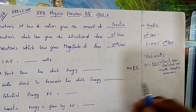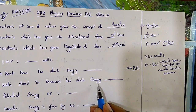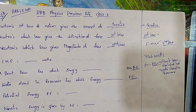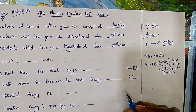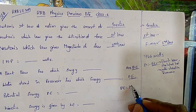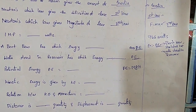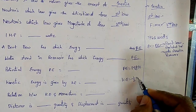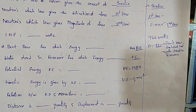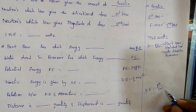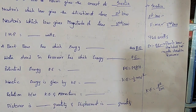Water stored in a reservoir also has potential energy. The formula for potential energy is PE = MGH. Kinetic energy is given by KE = half MV squared. The relation between kinetic energy and momentum is: kinetic energy equals P squared divided by 2M.